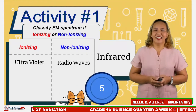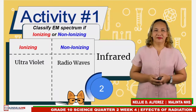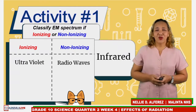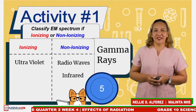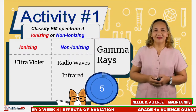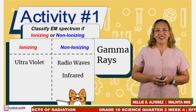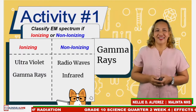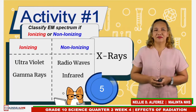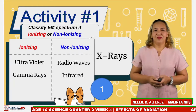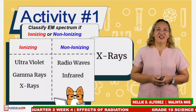Next is infrared. Timer starts now. Time is up. The answer is non-ionizing. Next is gamma rays — timer starts now. Time is up. What is the answer? Yes, it is ionizing. The last is X-rays — timer starts now. What is the answer? Correct — ionizing. Good job, students!